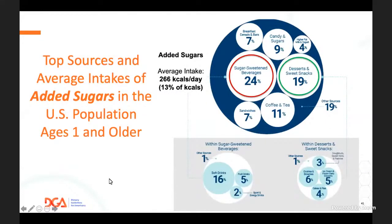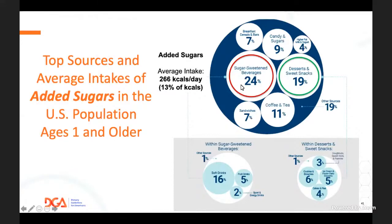Looking at top sources and average intakes of added sugar: on average, Americans are consuming about 266 calories per day from added sugar—about 13% of calories—so even getting to the 10% recommendation will require a cut. The primary sources of added sugar are sugar-sweetened beverages, predominantly soft drinks. Desserts and sweet snacks account for about 19%. We also see coffees and teas—particularly the Starbucks-type coffees with whipped cream and added sugars—as well as breakfast cereals, candies, and yogurt.